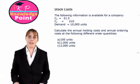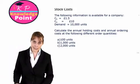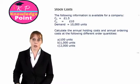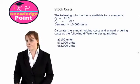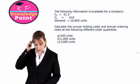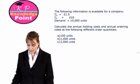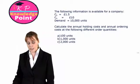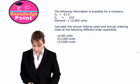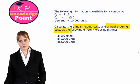To get us thinking about this, we're going to look at an exercise where we calculate our annual holding and ordering costs at different order quantities and look at the totals. We're given information about the cost of holding one unit per annum, the cost of placing a single order, and annual demand. We've been asked to calculate the annual holding and annual ordering costs at a number of different order quantities. Let's set up our table and do our calculations.